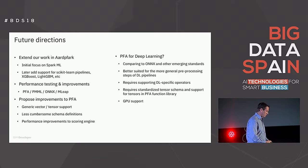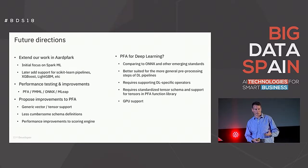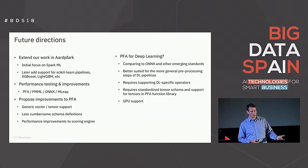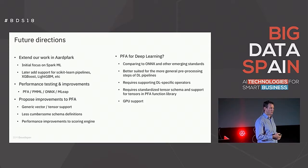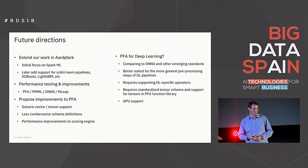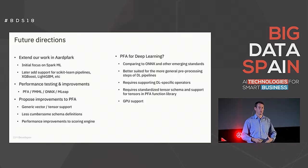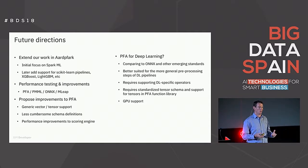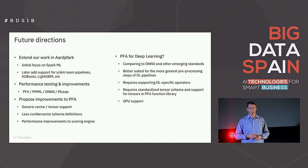For future directions in Aardvark, our initial work focused on Spark ML. We'd like to look at scikit-learn pipelines, XGBoost, LightGBM, and adding more comprehensive performance tests. We're proposing generic implementations to the standard — generic vector and tensor support, some improvements to performance and schema definitions. And finally, looking at PFA for deep learning: can the spec be extended to encompass deep learning, add GPU support, deep learning operators, tensor support? Can it actually become a holistic standard to cover both traditional machine learning as well as deep learning?